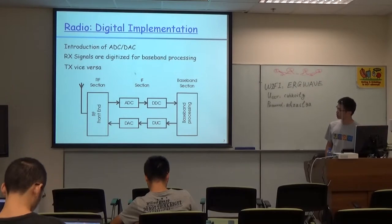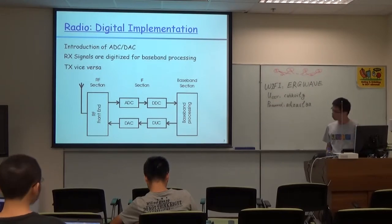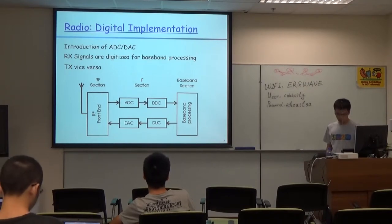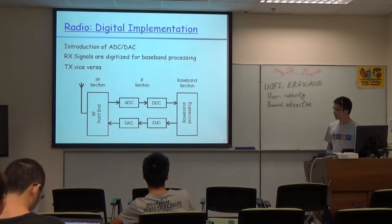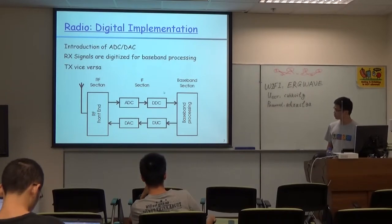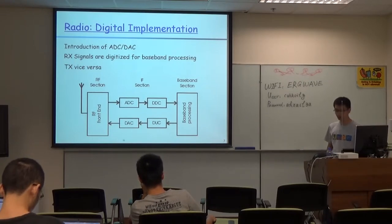For digital radio, people now use digital implementation to build radios, introducing ADC and DAC into the radio system to improve reliability. The architecture is similar — you have an RF path to convert the signal from RF to baseband, and then a baseband section for processing. The key difference is that digital radio uses ADC and DAC to digitize the signal, and the baseband section processes the digital signal.